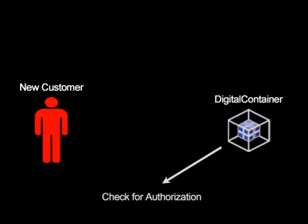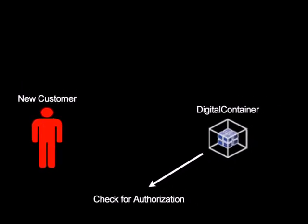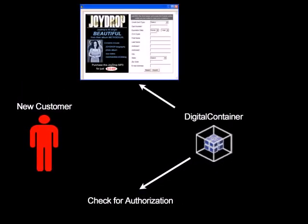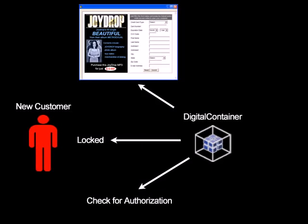Each time a digital container detects that it has arrived on a new device, it displays a prompt for user input. This data, along with unique ID data from the container, is securely sent to a container authorization server for evaluation. When a permission token is returned that authorizes the container to open, the container and its contents are locked to the user's device.